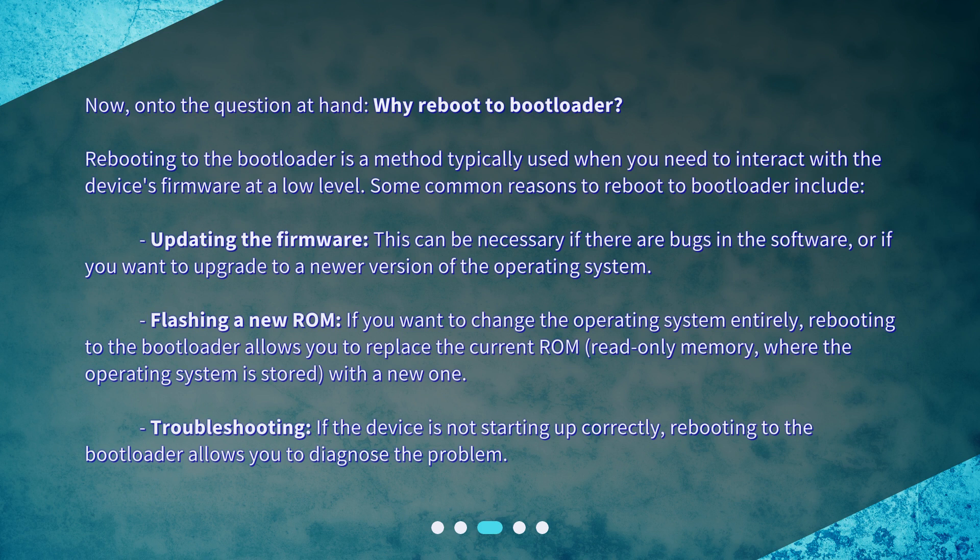Updating the firmware — this can be necessary if there are bugs in the software, or if you want to upgrade to a newer version of the operating system. Flashing a new ROM — if you want to change the operating system entirely, rebooting to the bootloader allows you to replace the current ROM (read-only memory), where the operating system is stored, with a new one. Troubleshooting — if the device is not starting up correctly, rebooting to the bootloader allows you to diagnose the problem.